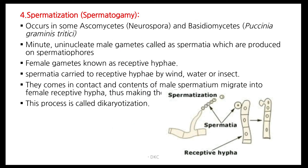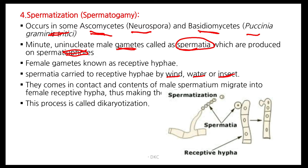Spermatization occurs in Ascomycetes like Neurospora and Basidiomycetes like Puccinia graminis tritici. Minute, uninucleate male gametes called spermatia are produced in spermatiophores. Female gametes are known as receptive hyphae. Spermatia are carried to receptive hyphae by wind, water, or insects. They come in contact and the content of the male spermatium migrates into the female receptive hyphae, making a heterokaryotic condition — the process is called dikaryotization.